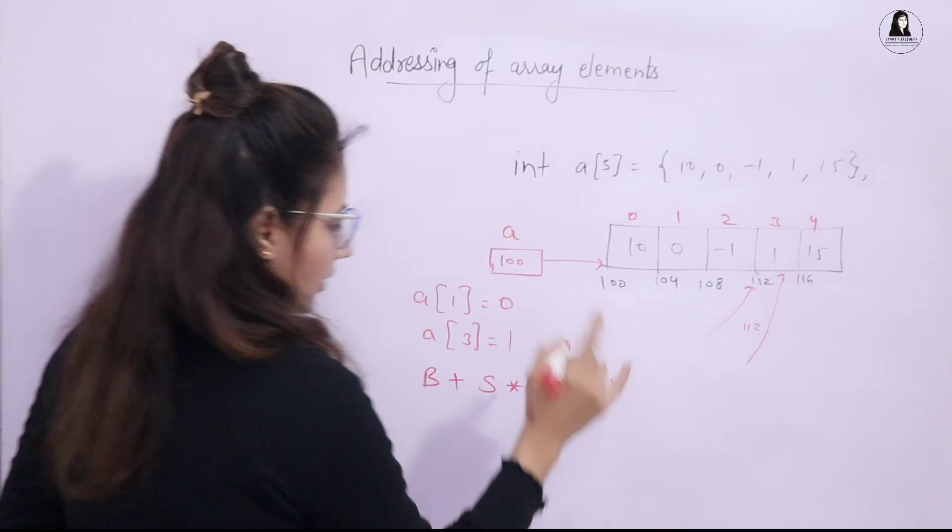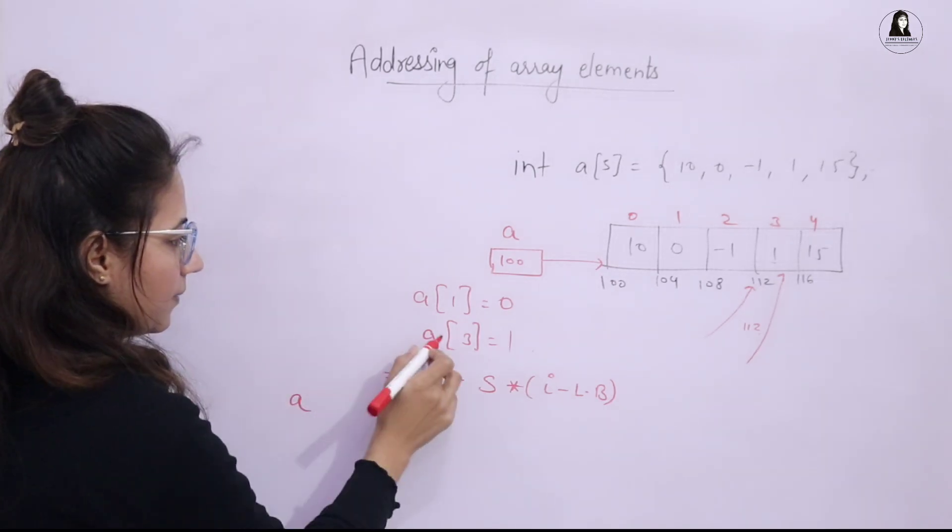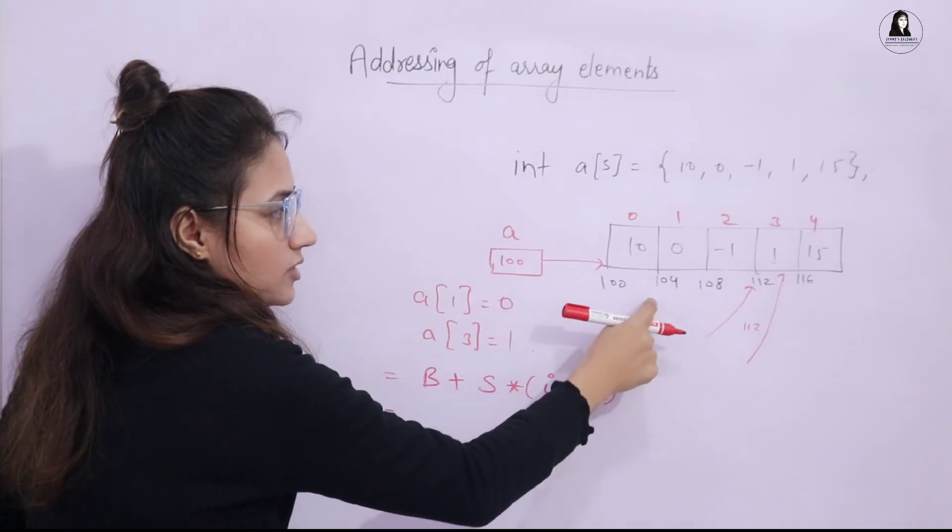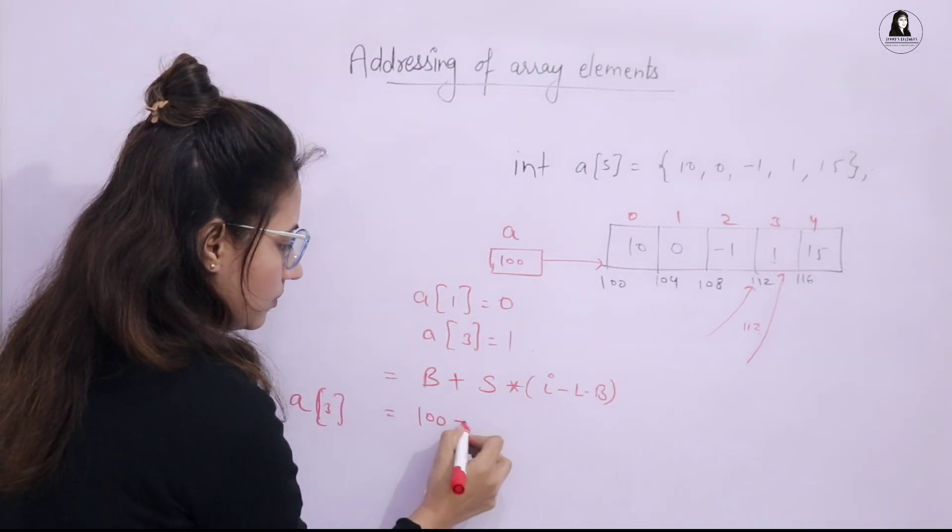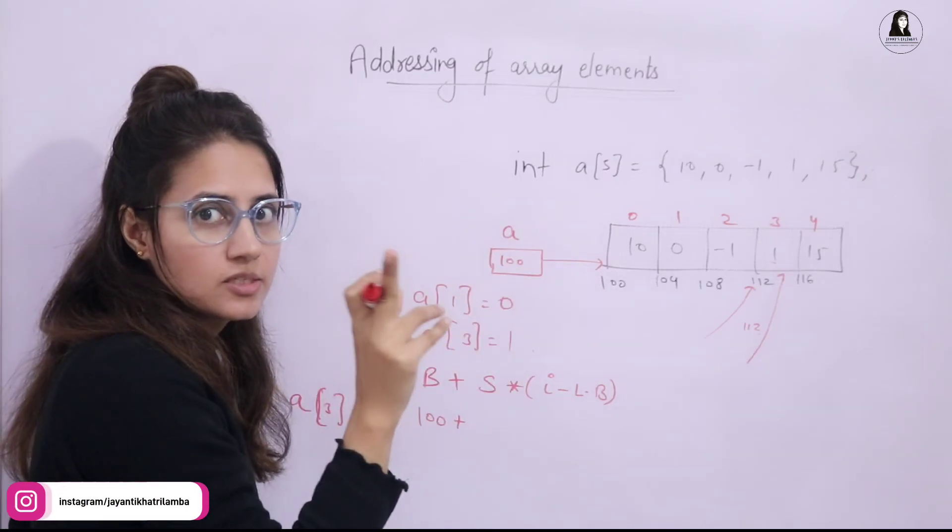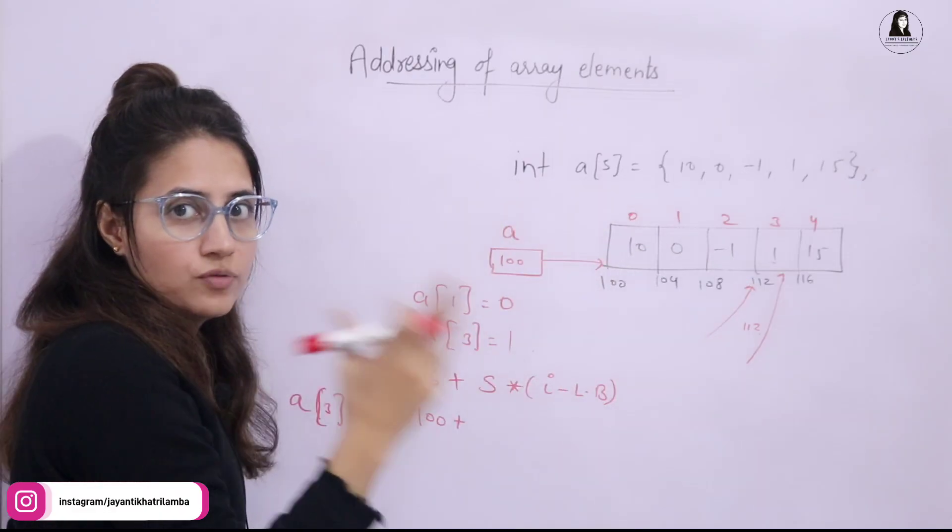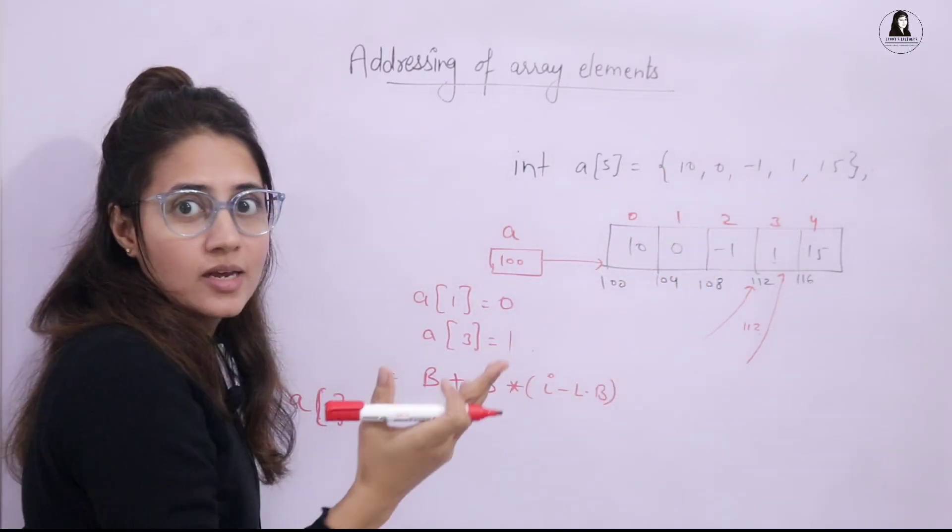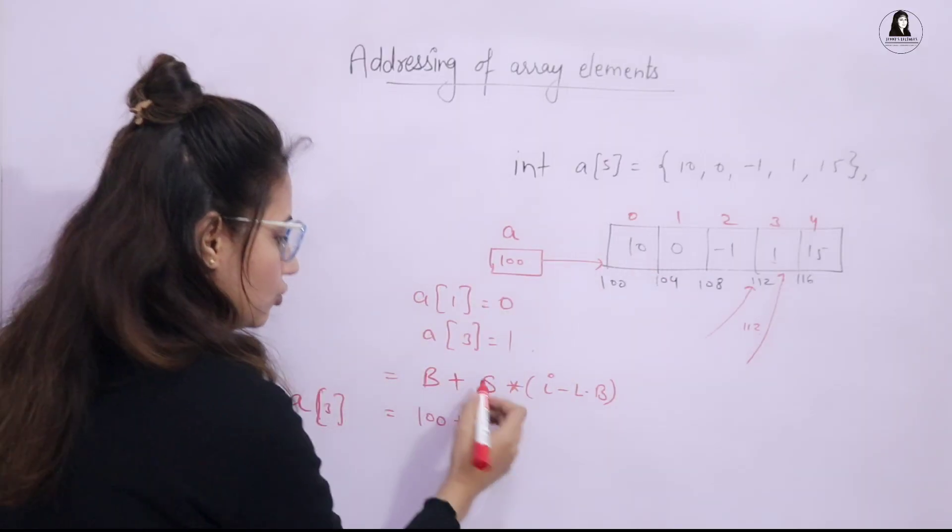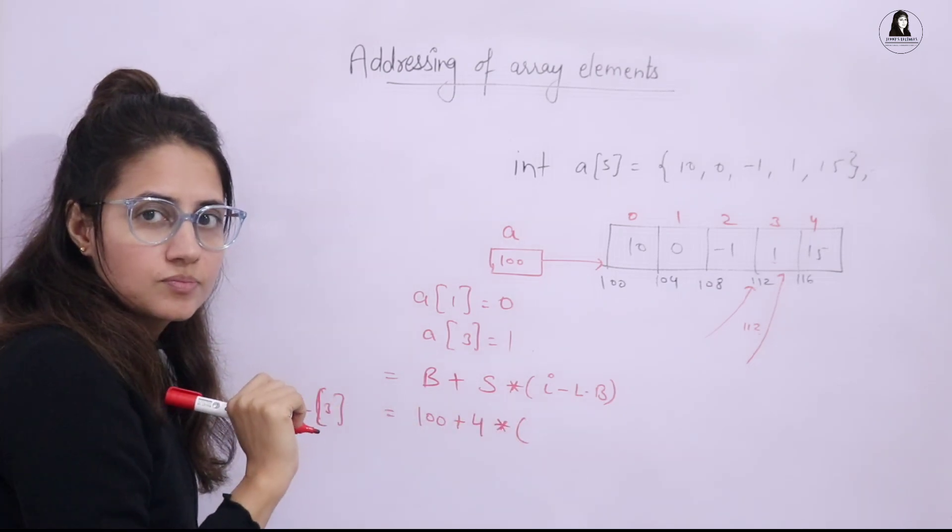See, now here this B is base address. So if I take example of A of 3, base address of the array, base address of this array is what? 100. So let's take 100 plus this S is what? Size of a single element of that array in bytes. So in this array, size of a single element because this is of integer type. And obviously, all the elements would be integer because array is collection of homogeneous data types. So one element will take 4 bytes. So size is 4 into this I is what? The index.